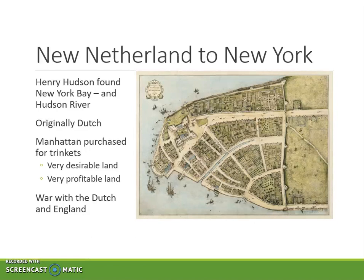After Charles II came to the throne, the English became very interested in Dutch holdings in the New World. In 1664 he granted the land to his brother, the Duke of York, which was interesting because technically England did not yet own New Netherland. But when a powerful English military unit appeared off the coast of New Amsterdam, the governor was forced to surrender. New Netherland became the property of the English Crown and was renamed New York, to be administered by the Duke of York — the future James II.